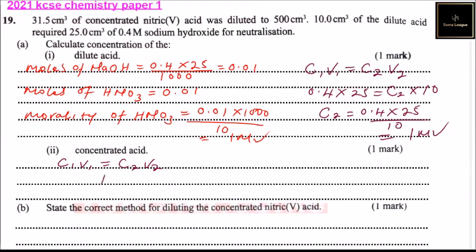This means 1 multiplied by 500 cm³ divided by 1.5 gives you 15.9 moles.